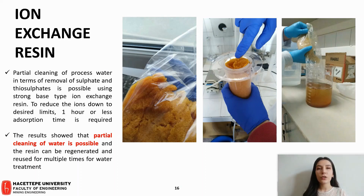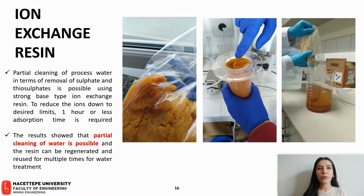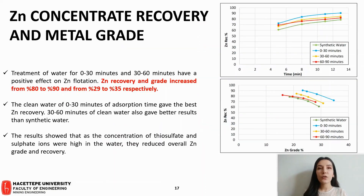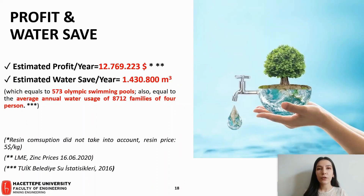To reduce the ions down to desired limits, one hour or less adsorption time is required. In adsorption, 84% of sulfate in water could be successfully removed. Regeneration of the ion exchange resin was also performed and it was found that the resin could be used multiple times for subsequent water treatment stages. The treated water was mixed with tap water in a ratio of 70 to 30%, and this mixed water was used for flotation tests. The results show that treatment of water improved the zinc flotation process, with zinc concentrate recovery and metal grade increasing from 80% to 90% and from 29% to 35% respectively.